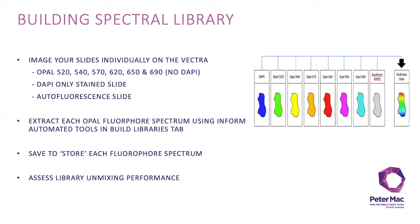You then navigate to the Build Libraries tab in InForm to extract each opal fluorophore spectrum. Then save to store each fluorophore spectrum, preferably with a color that will make it easier to discern in composite view and with a meaningful group tag. And lastly, you assess your library unmixing performance.